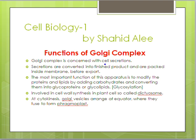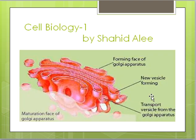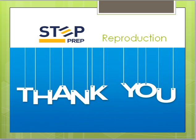Functions of the Golgi apparatus: its primary function is cell secretion — it processes and packages the finishing products. The most important function is modification of proteins and lipids by addition of carbohydrates to form conjugate molecules, a process called glycosylation. In plants, the Golgi apparatus is called the dictyosome, and it is involved in the formation of the fragmoplast, the middle lamella, and precursors of the primary wall.